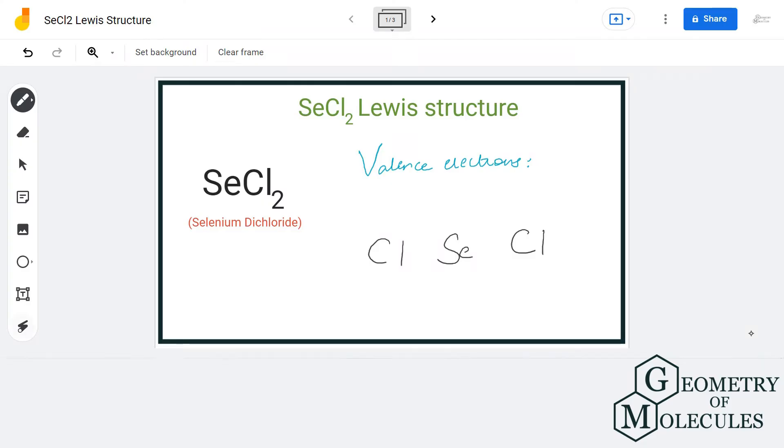Hi guys, welcome back to our channel. In today's video we are going to help you with SeCl2 Lewis structure. It's a chemical formula for selenium dichloride, and to determine this Lewis structure we will first find out the total number of valence electrons.